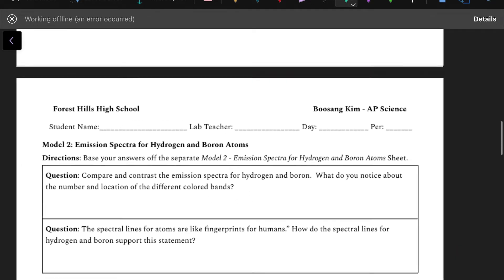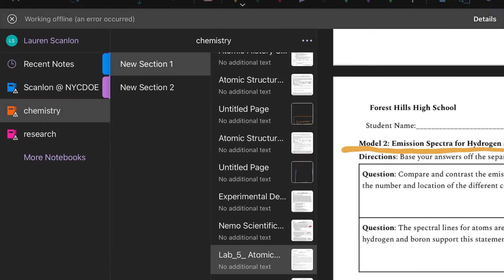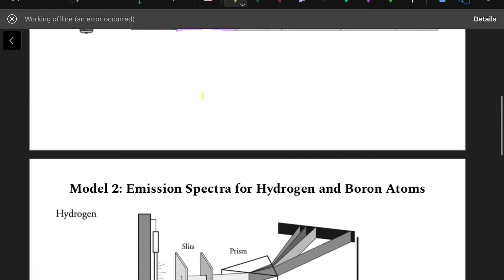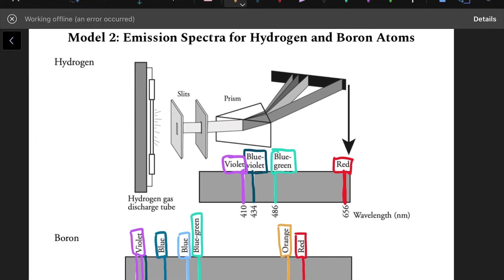Then move on to model number two, which is right here. You only have two questions in this section, and these two questions are based on, you might have guessed it, the model two image that you will see on your lab station. So these pictures are used for those two questions.